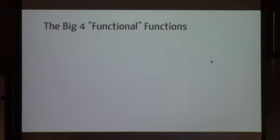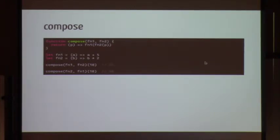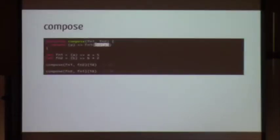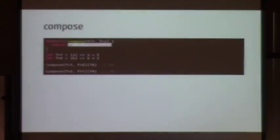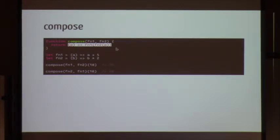I'm going to go over the big four functional functions. The first is compose. Using JavaScript ES6 syntax — the compose function merges two functions together. All it does is call function two with whatever parameter we're passing, then calls function one on top of that result. This little thing just chains two functions together. Compose takes two functions and returns a third function which calls FN2 first, then passes the result to FN1.